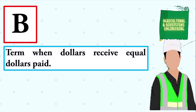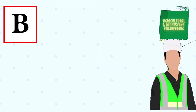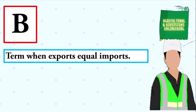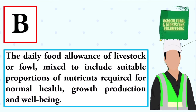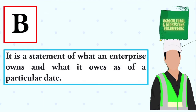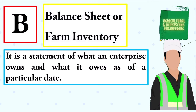Term when dollars received equal dollars paid. The answer is: balance of payment. Term when exports equal imports. The answer is: balance of trade. The daily food allowance of livestock or fowl mixed to include suitable proportions of nutrients required for normal health, growth, production, and well-being. The answer is: balanced ration. It is a statement of what an enterprise owns and what it owes as of a particular date. The answer is: balance sheet or farm inventory.